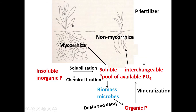Looking at this picture, the mycorrhizal association mainly benefits the plant in the form of phosphorus. You know the importance of phosphorus — it is given in fertilizers also. In this particular reaction, phosphorus is basically insoluble.